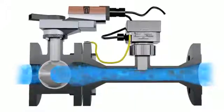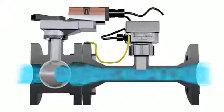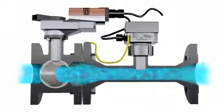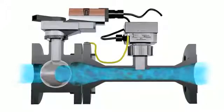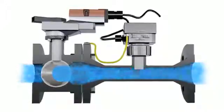Pressure independent valves help prevent energizing additional chillers by maintaining desirable delta T. Constant flow performance significantly reduces actuator movement, providing less hunting and wear on the valve assembly.